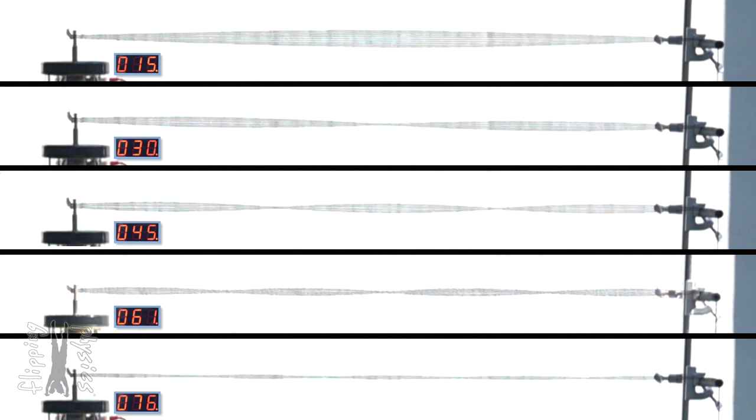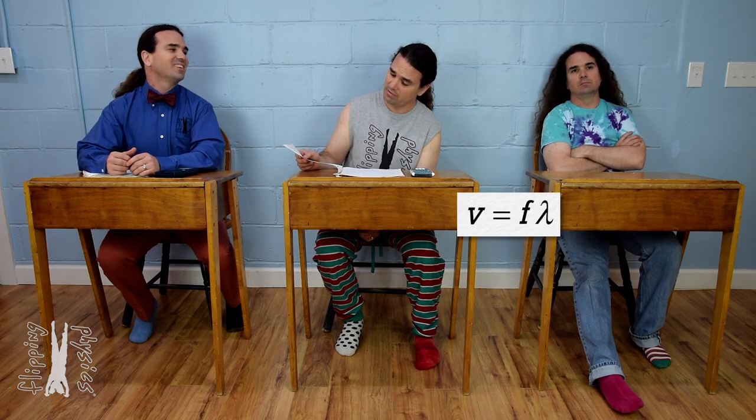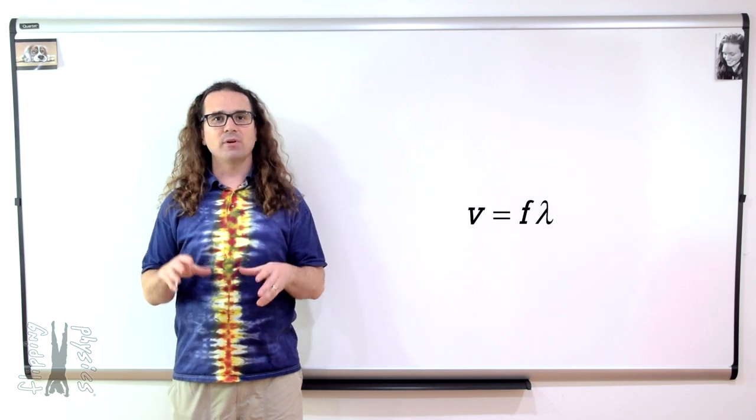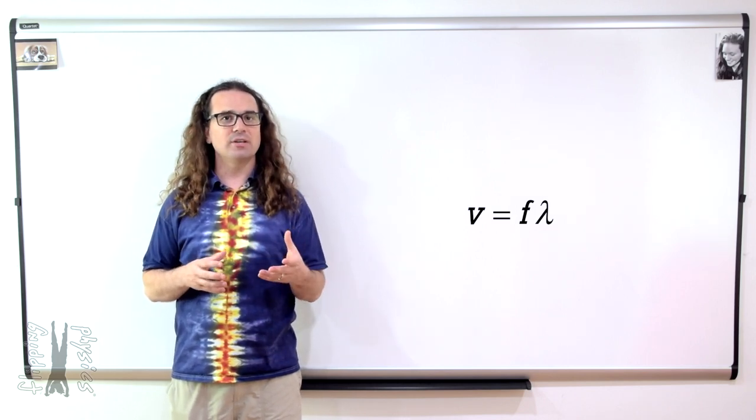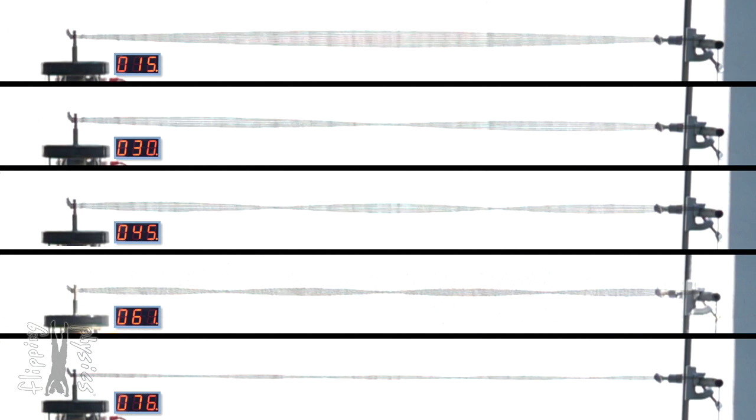Bobby, what is the equation for the speed of a wave in a medium? The speed of a wave equals frequency times wavelength. Then Bo, as the frequency of each demonstration increases from 15 to 76 hertz, what must be happening to the wavelength of the wave on this string?